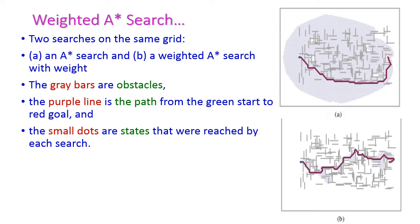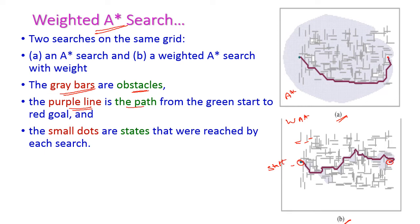Let us see one example of how weighted A* search reaches the goal while exploring a minimum number of nodes. Here we have two graphs — the first one is A* search and the second one is weighted A* search. In this grid, the gray bars represent the obstacles. The purple line is the path from start to goal. The green dot represents the start node and the red dot represents the goal node.